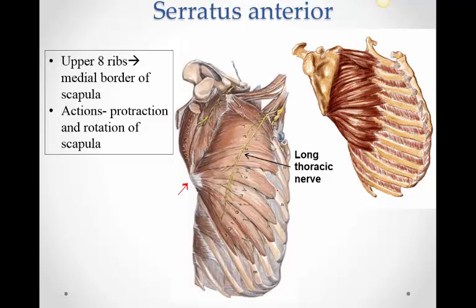The next muscle is serratus anterior. It arises by eight digitations from the upper eight ribs, travels along the side wall of the thorax, passes deep to the scapula, and comes and gets attached on the medial border of the scapula.